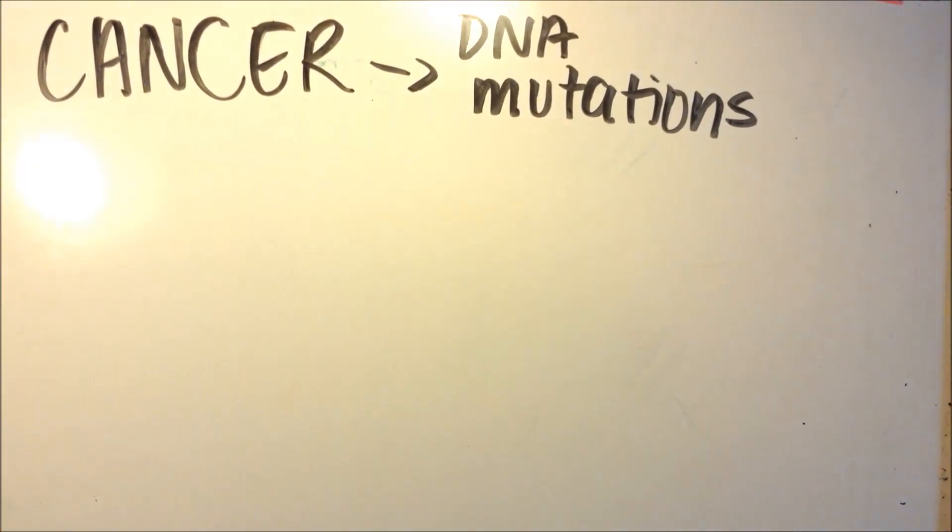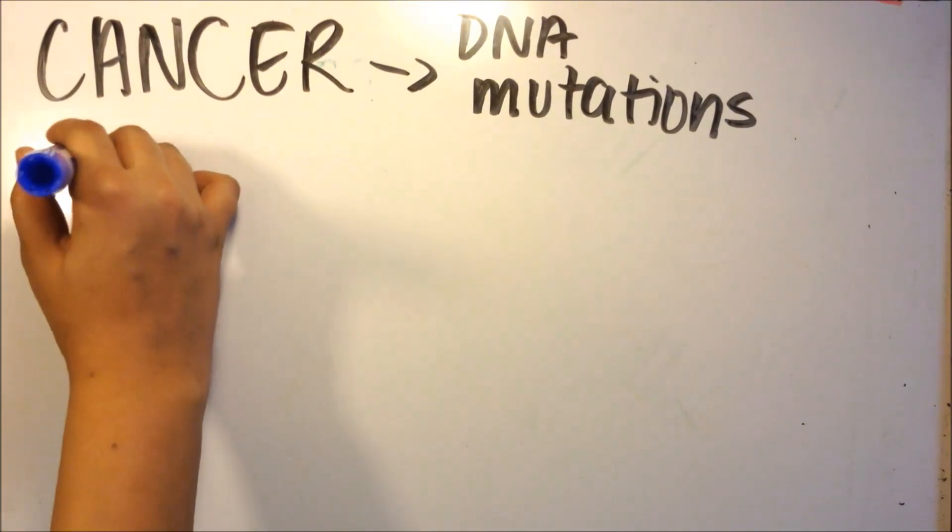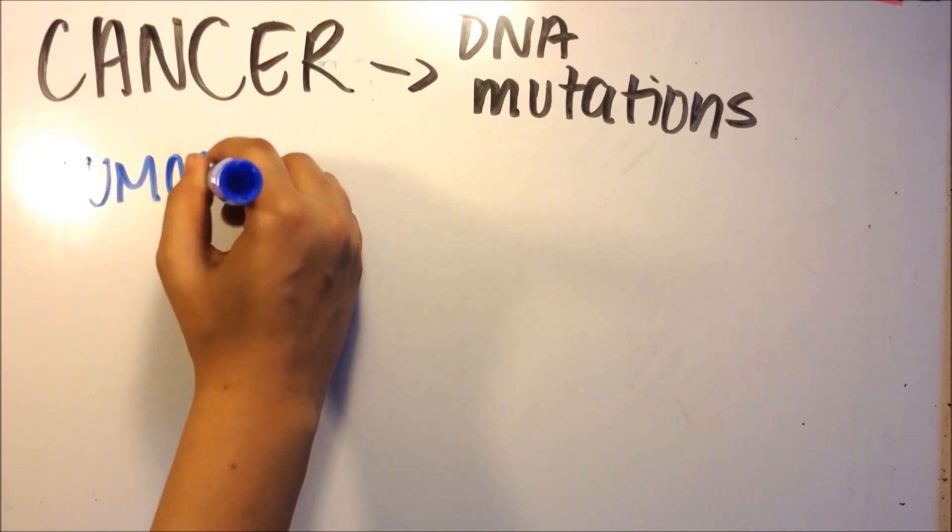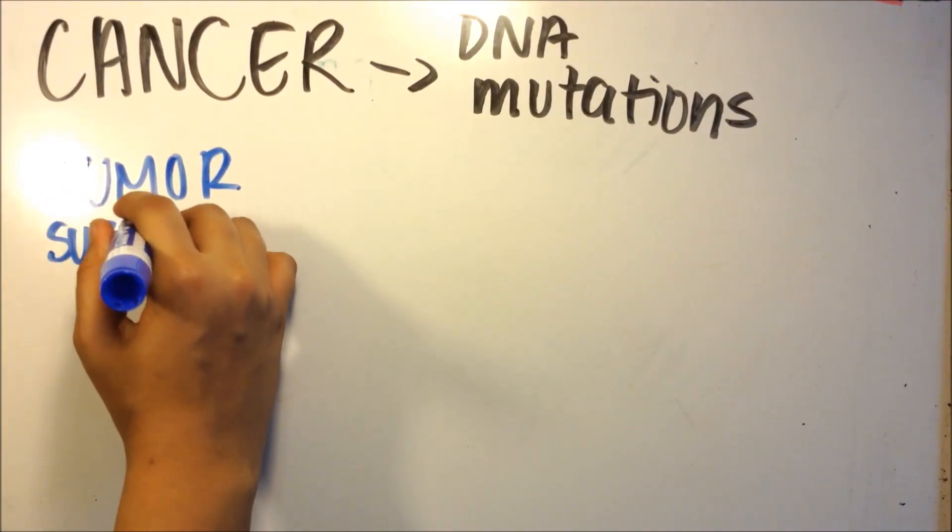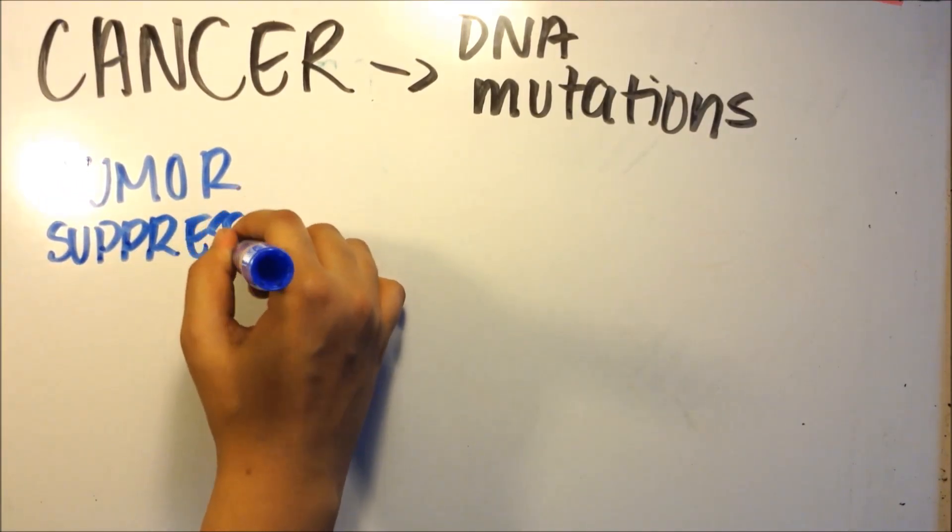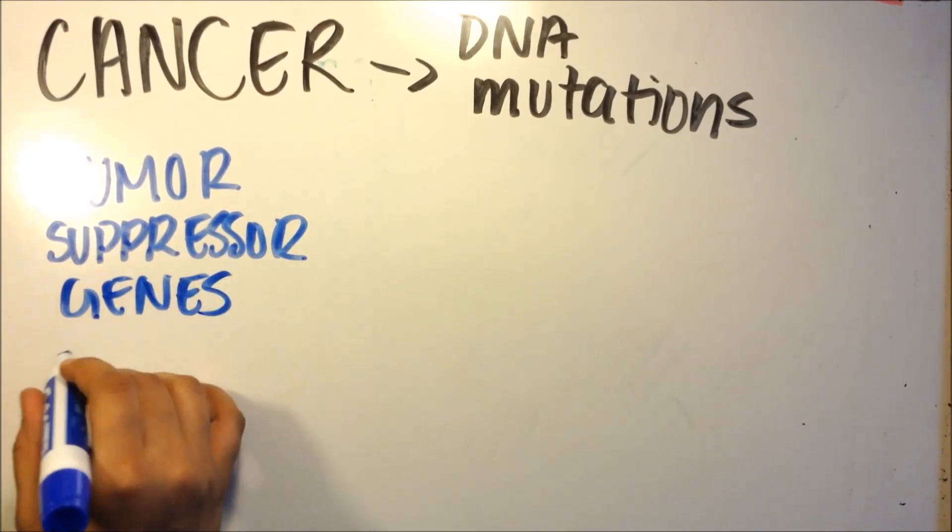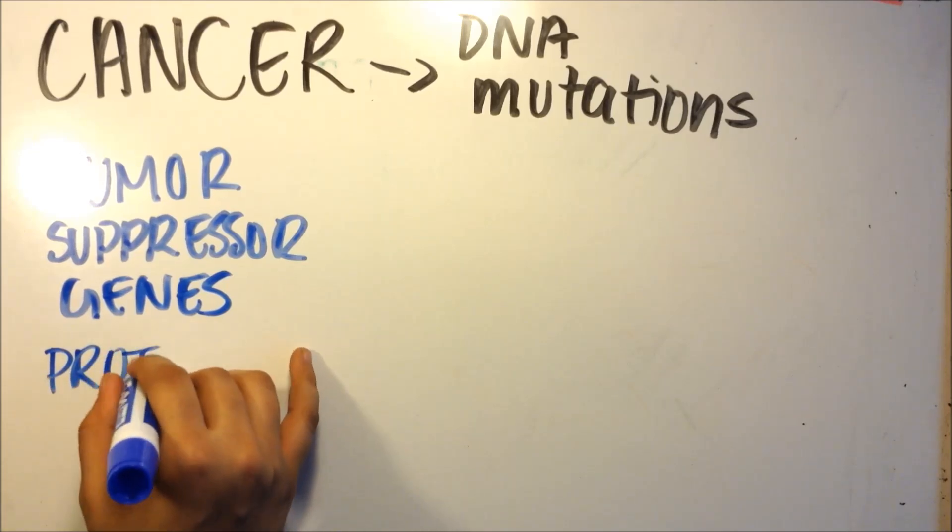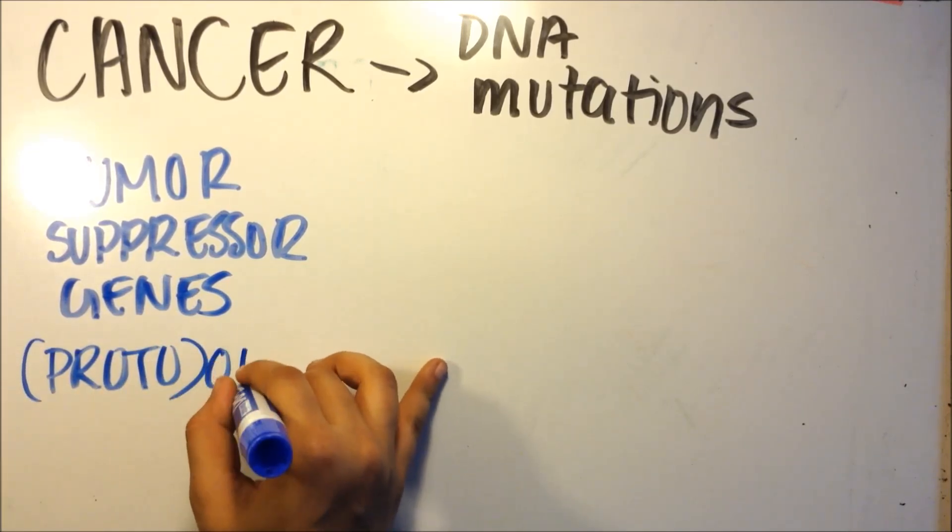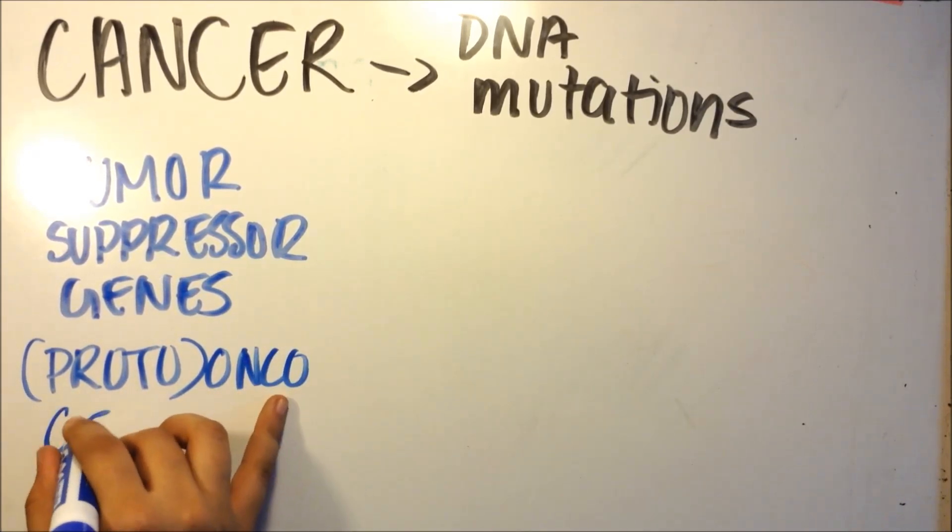Let's talk about two types of genes that we usually see in cancer cells that have been deactivated or activated the wrong way. The first gene is the tumor suppressor gene, and these genes suppress tumors. There's also proto-oncogenes and oncogenes. We're going to talk about what happens to these two types of genes when there's mutations.